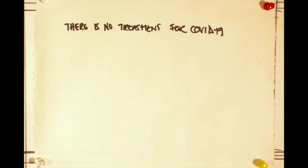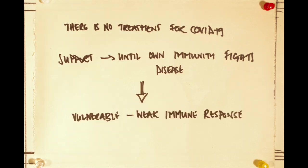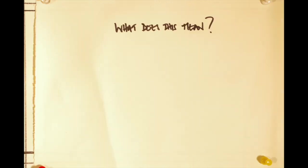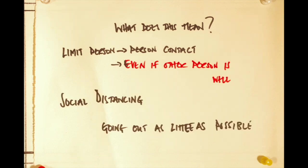So what does this mean? Currently there is no treatment for COVID-19; all we can do is support patients until their own bodies fight the disease. That's why the vulnerable, with their weaker immune response, are dying. We need to limit person-to-person contact as much as possible, even if the other person appears well, and practise social distancing by going out as little as possible.